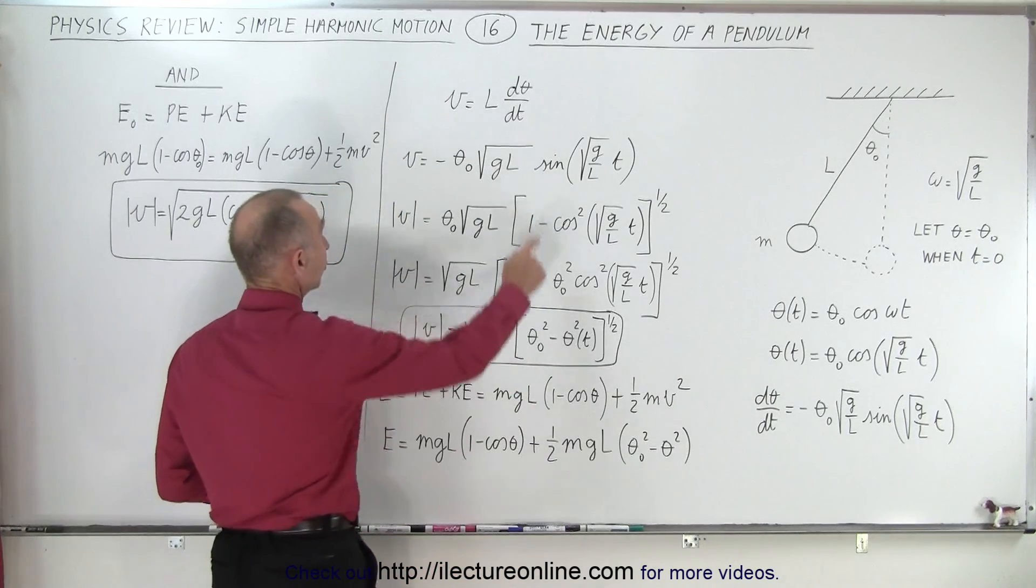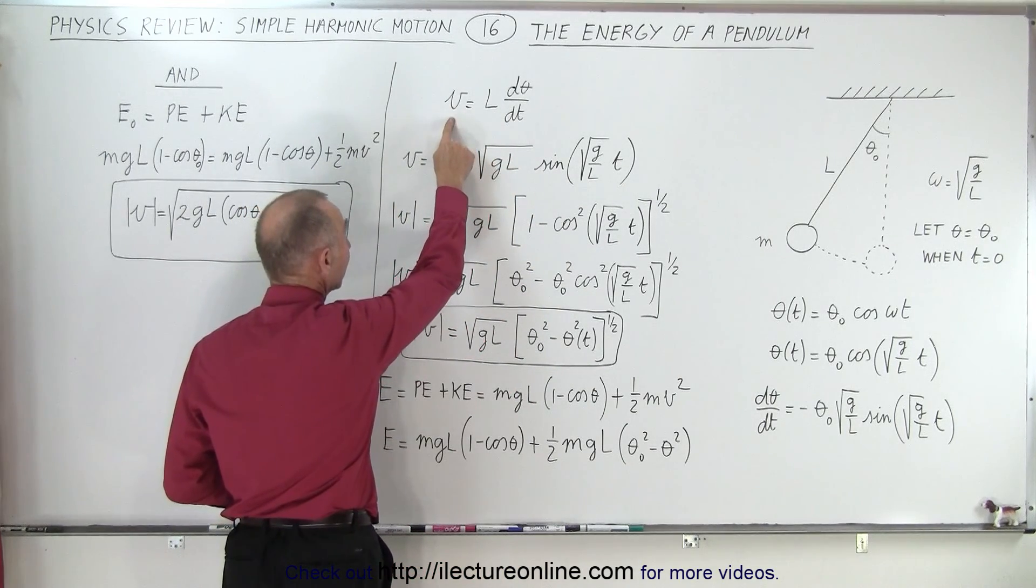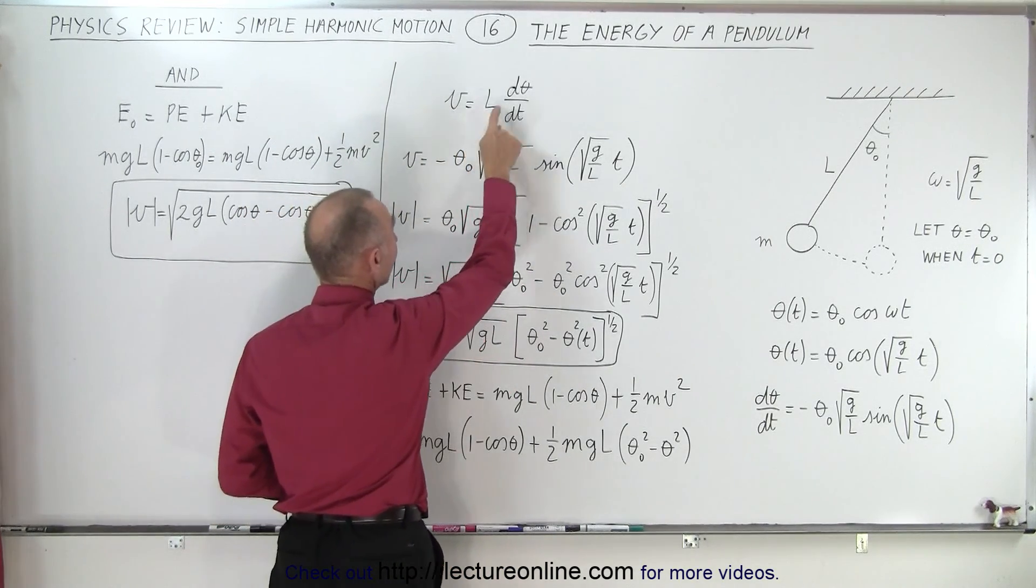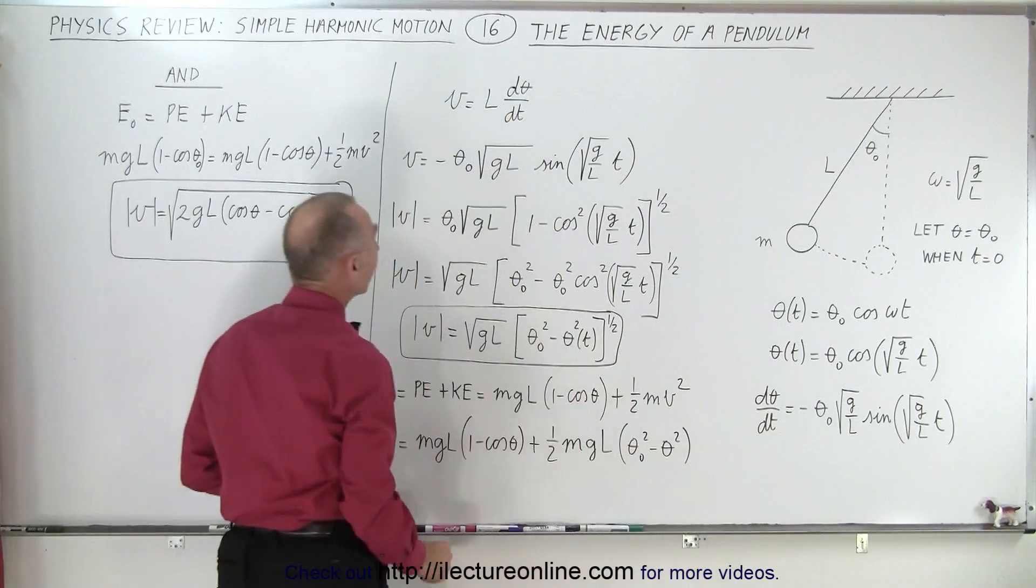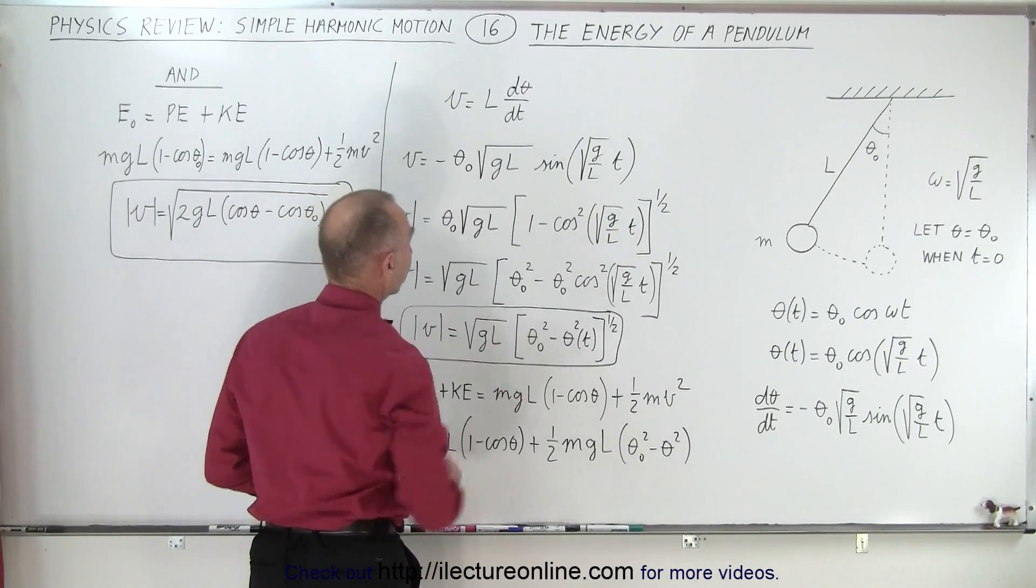Why do we take the derivative? Because we want to express the velocity in terms of the length times d theta dt, and of course d theta dt is what we calculated over here, and now we have an expression for the velocity.